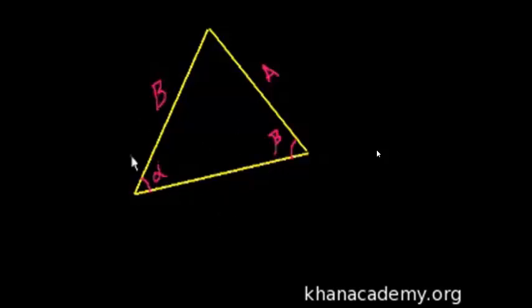So let's see if we can find a relationship that connects A and B and alpha and beta. And hopefully that relationship we find will be the law of sines. Otherwise, I would have to rename this video. So let me draw an altitude here. So if I just draw a line from this side coming straight down.